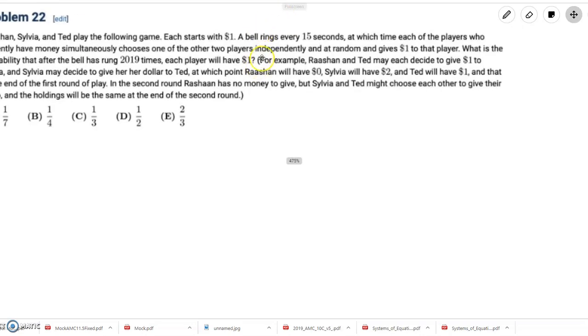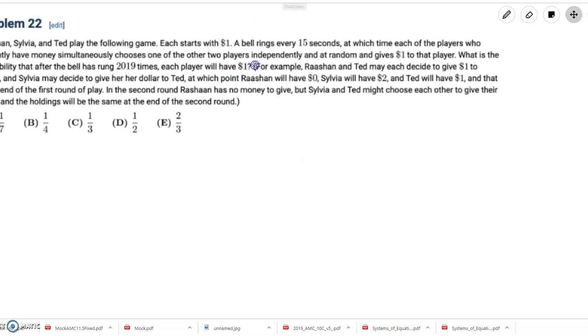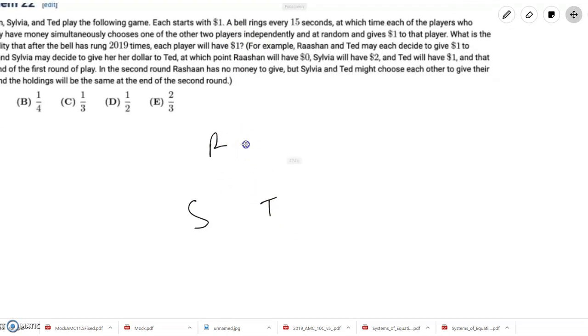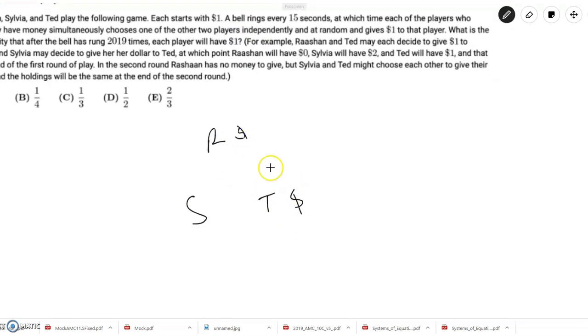So the problem basically describes the game pretty well. But to summarize, we have three players. We'll call them R, S, and T. And they have some amounts of money. And at each round, they choose one of the other players to give their money to.